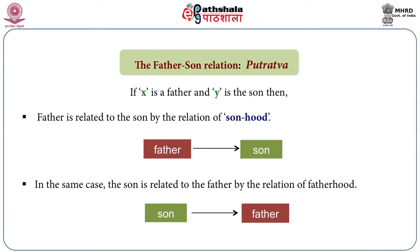There are many relations formulated and accepted where the property of the base-relatum is taken as the relation. For example, if we take son-ness (putratva), putratva would become a relation of father to son — because in the father there is fatherhood, and in the son (putra) there is sonhood. Sonhood is the relation of father to son. Fatherhood or sonhood can thus be understood as a different kind of relation altogether.